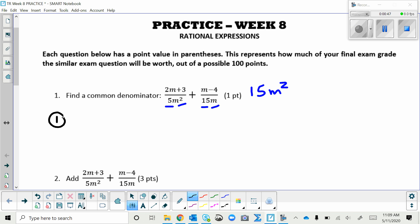You multiply them together, 5 times 15 is 75, and m squared times m is m cubed. And then you divide by their common factor, which is 5 and m. And then when you divide those two things, you get 15m squared. So either way you can come up with that same answer.